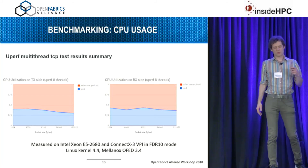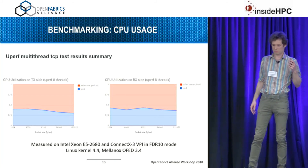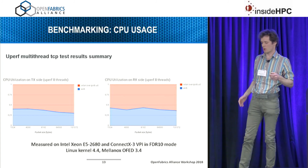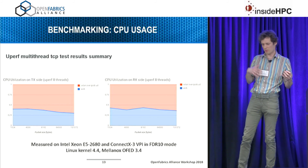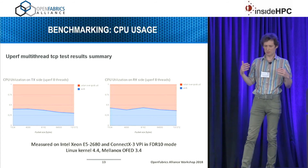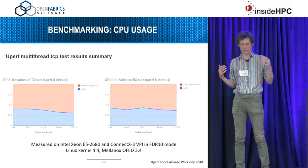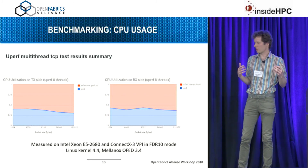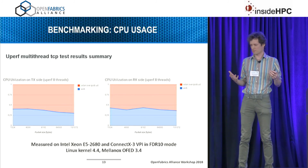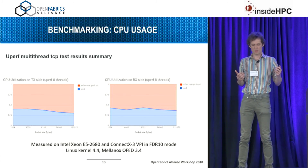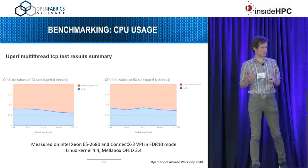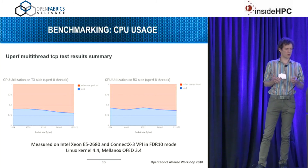UIB also showed better — that is, lower — CPU utilization. We took a test case where UIB and VXLAN over IPoIB in UD mode showed similar bandwidth performance with the InfiniBand path being the bottleneck, and compared CPU utilization for those cases. UIB is more than 30% better in CPU utilization than VXLAN over IPoIB.